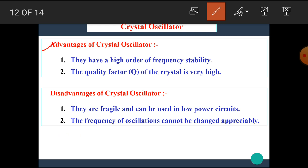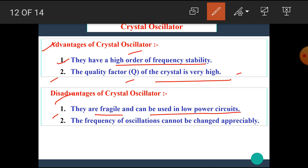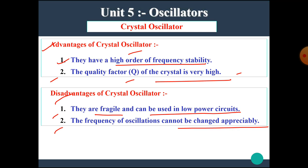The advantages of the crystal oscillator are: they have a high order of frequency stability, and the quality factor Q of the crystal is very high. Some disadvantages include: they are fragile, can only be used in low power circuits, and the frequency of oscillations cannot be changed appreciably.